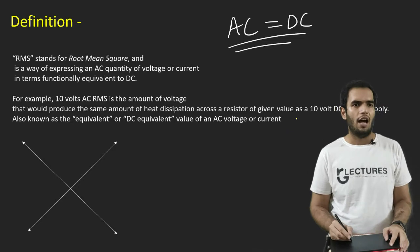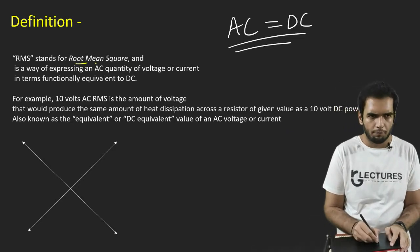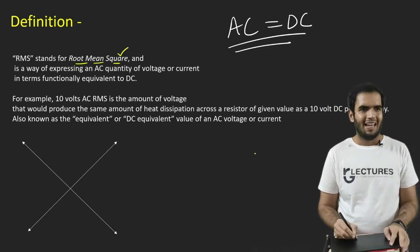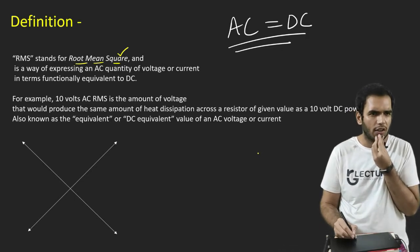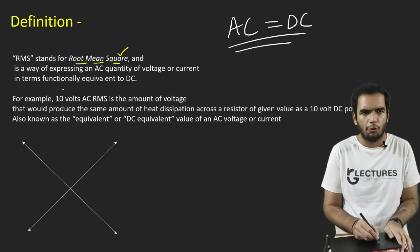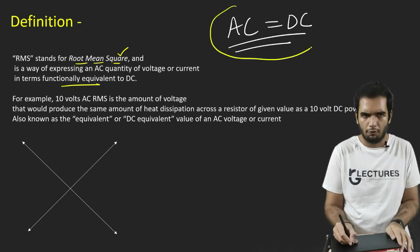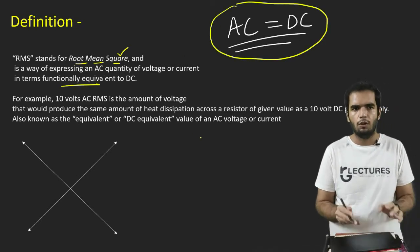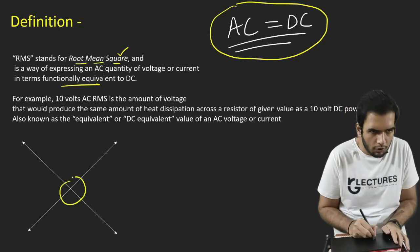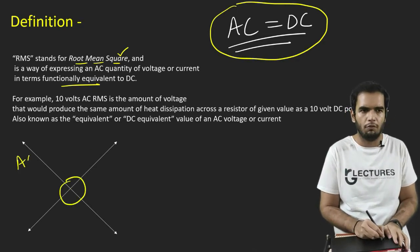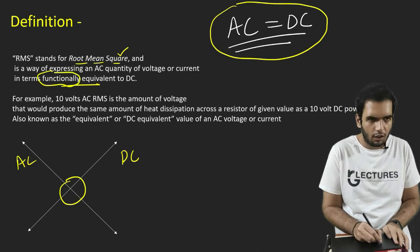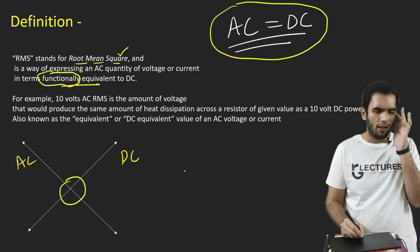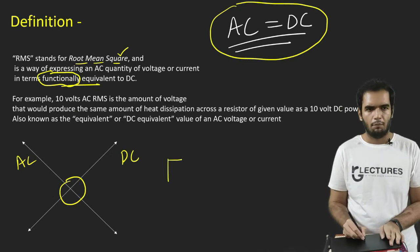Now at RMS value, AC becomes almost equal to DC, though it is not technically correct to say this. But let us see through the example. So here it is given that the RMS stands for root mean square and is a way of expressing an AC quantity of voltage or current in terms of functionality equivalent to DC.